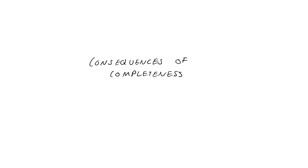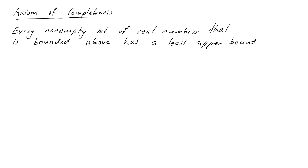Now that we've set up our terminology and understand how to use it for things like boundedness, we can return to our axiom of completeness and see what it actually means. The axiom of completeness states that every non-empty set of real numbers that is bounded above has a least upper bound. This is the one thing we add to our system that defines the real numbers — supremums always exist for sets that are bounded above.